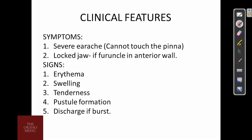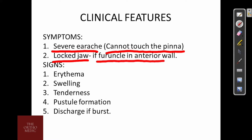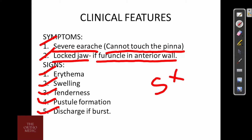The clinical features are severe earache — the pain is so severe that the patient will not even allow you to touch the pinna. Lockjaw or trismus occurs if the furuncle is present in the anterior wall. The signs are erythema, swelling, tenderness, postural formation, and discharge if burst. Speculum examination is not done because there is a chance of rupture of the furuncle; therefore, it is contraindicated.